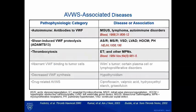Acquired von Willebrand syndrome is, in my opinion, underdiagnosed in clinical practice. There are three major groups of associated diseases. The first is due to autoantibody against VWF, including MGUS or myeloma, lymphoma, or autoimmune disorders such as lupus. The first case was reported in 1968, describing a patient with systemic lupus erythematosus who developed an autoantibody against his own VWF.